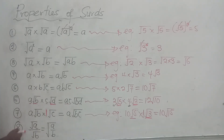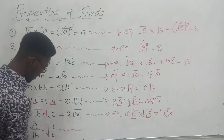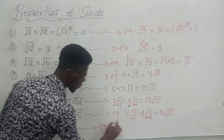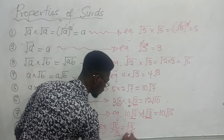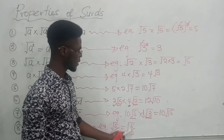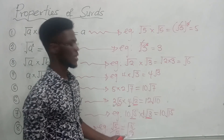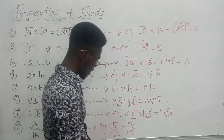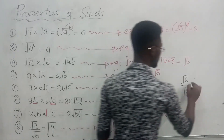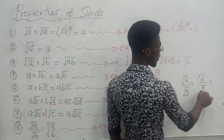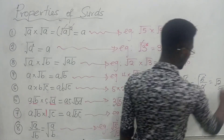The last property says: if you have the square root of a divided by the square root of b, it is equal to the square root of a over b. For example, root 5 over root 2 is simply the square root of 5 over 2. If you have the square root of 6 over the square root of 3, it becomes the square root of 6 over 3 — and since 6 divided by 3 is 2, the answer simplifies to the square root of 2.